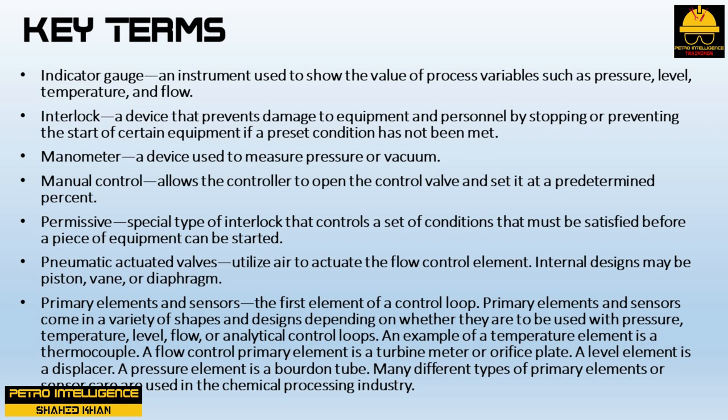An indicator gauge is an instrument used to show the value of process variables such as pressure, level, temperature, and flow. An interlock is a device that prevents damage to equipment and personnel by stopping or preventing the start of certain equipment if a preset condition has not been met. A manometer is a device used to measure pressure or vacuum. Manual control allows the controller to open the control valve and set it at a predetermined percent. A permissive is a special type of interlock that controls a set of conditions that must be satisfied before a piece of equipment can be started.